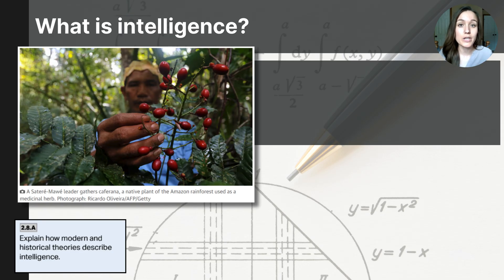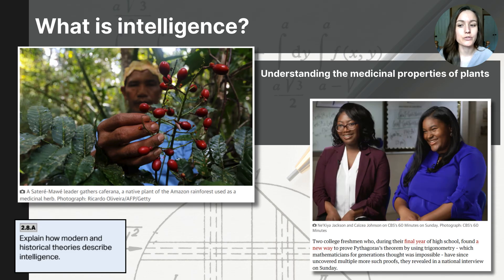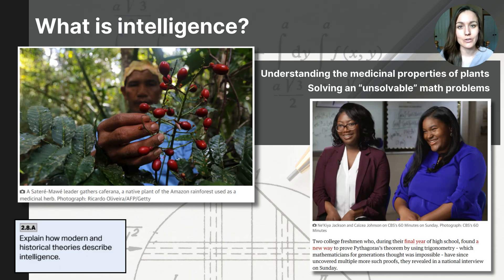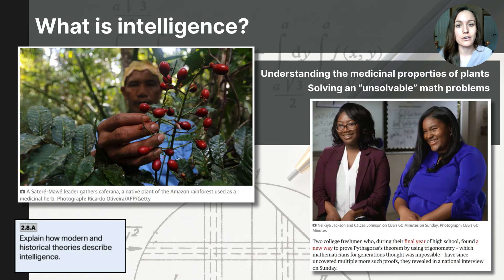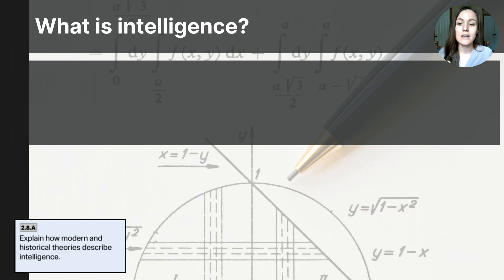For example, in a hunter-gatherer society, being intelligent may involve knowing the medicinal properties of plants. While being a high school student in North America, intelligent might look like being able to solve complex math problems, like the students on the right who developed proofs for the Pythagorean theorem using trigonometry, which was believed to be impossible for 2,000 years. These are examples of intelligence. It's important that we are not using cultural standards as our definition.